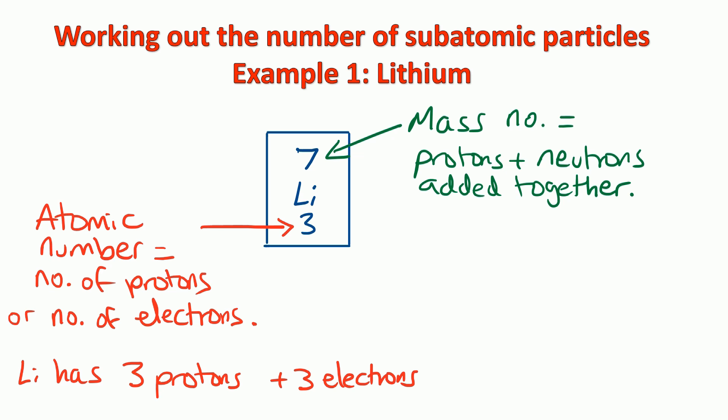We know that 3 of those are protons because the atomic number is 3. So to work out the number of neutrons, you do the mass number take away the atomic number. So in the case of lithium, that would be 7 minus 3, which is 4 neutrons.